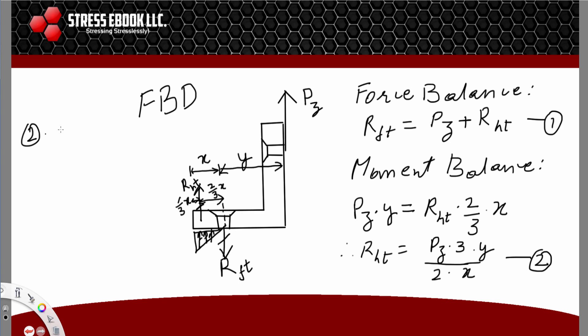Now we put equation 2 into equation 1. Therefore, RFT is PZ times (1 plus 3Y divided by 2X), since PZ is common. That's basically what your fastener reaction would be, mainly because of the prying effect.